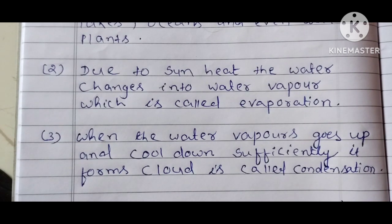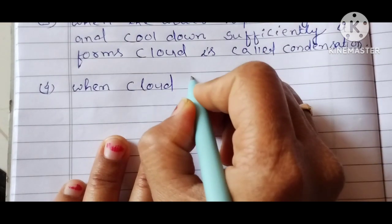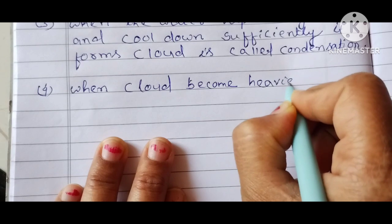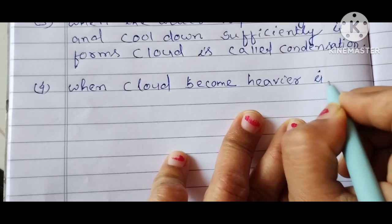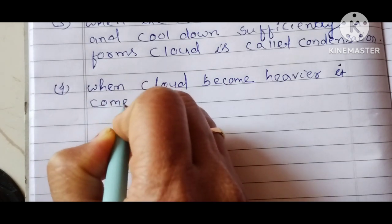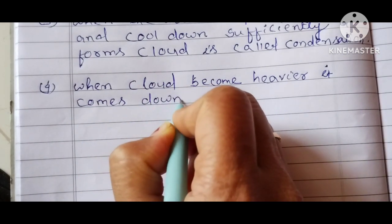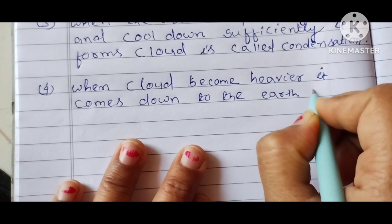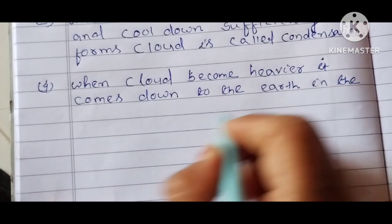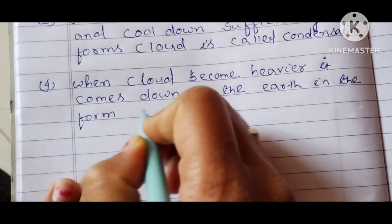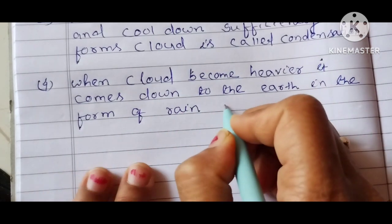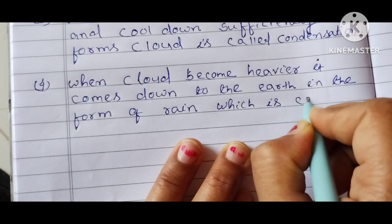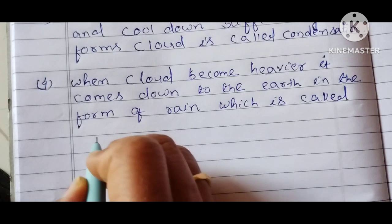Okay. When clouds become heavier, they come down to the earth in the form of rain, which is called precipitation.